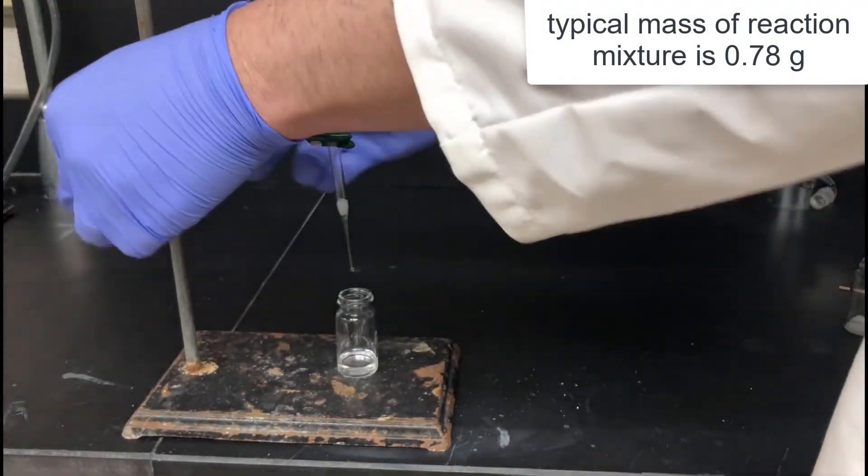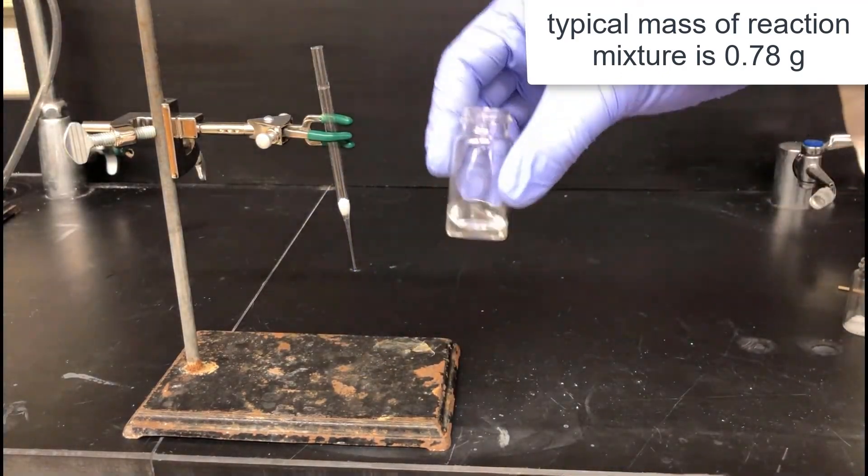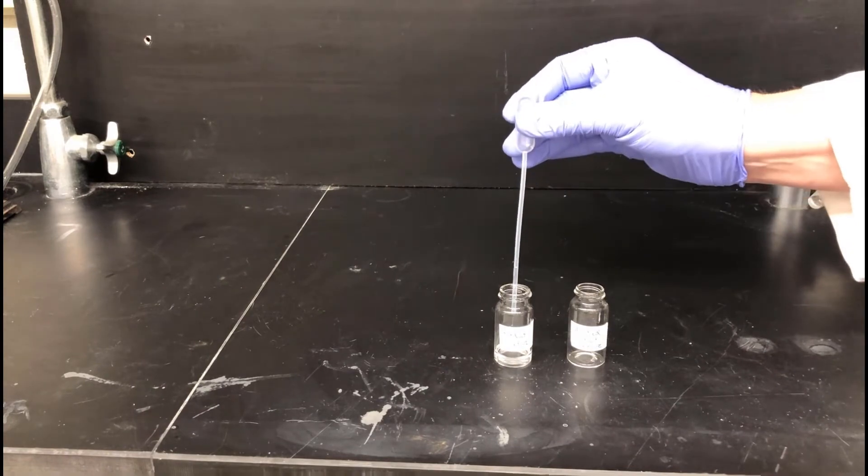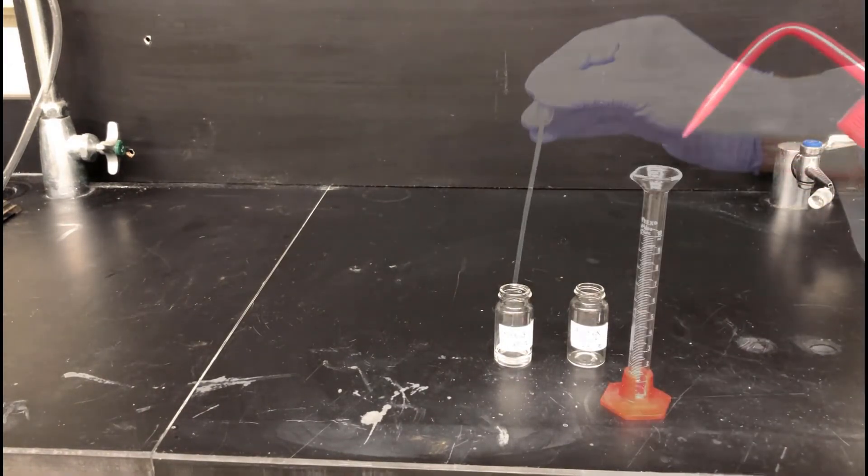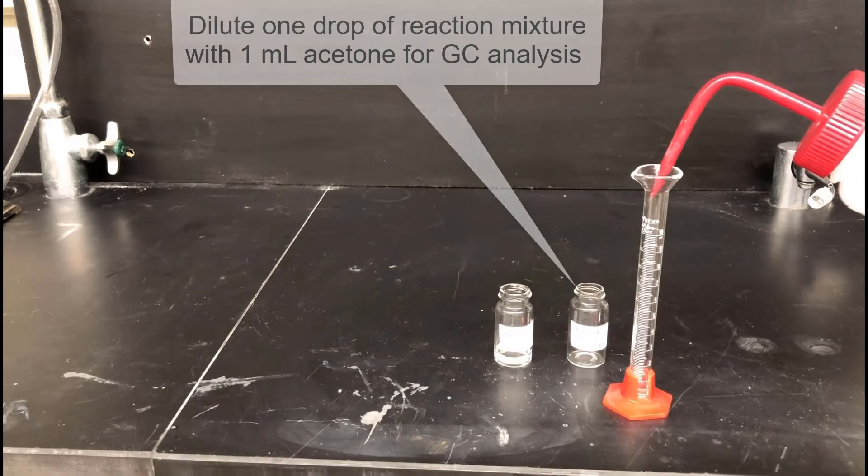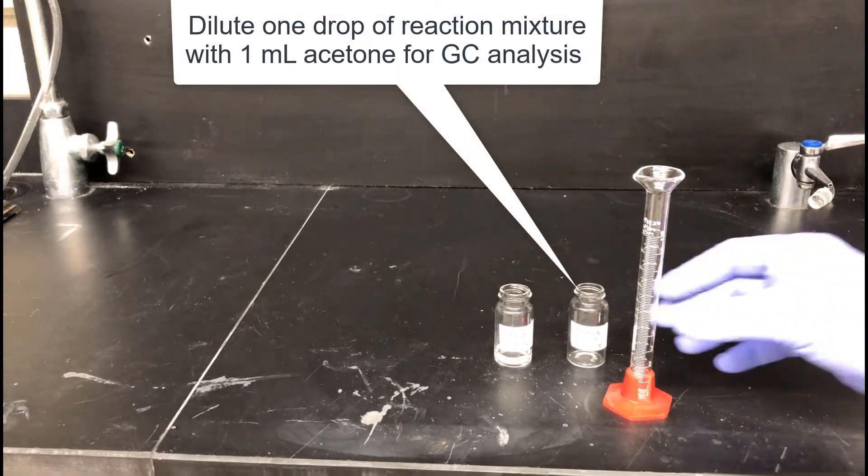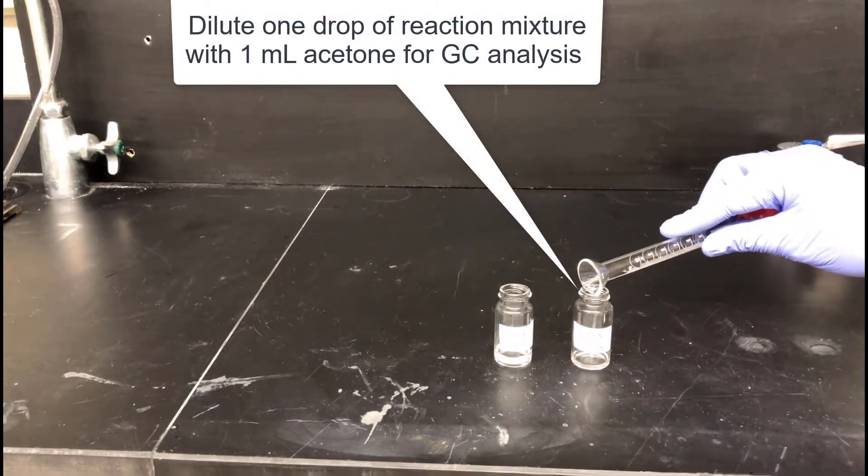A typical mass for this reaction is 0.78 grams of liquid product mixture. To make a sample for GC, add one drop of the reaction mixture to a clean, dry vial and then dilute with 1 milliliter of acetone. This diluted sample will be appropriate for GC analysis.